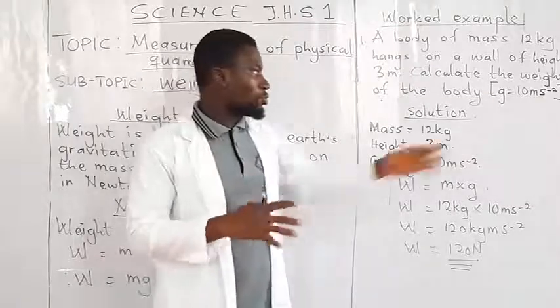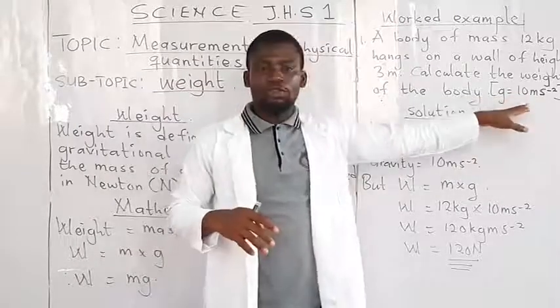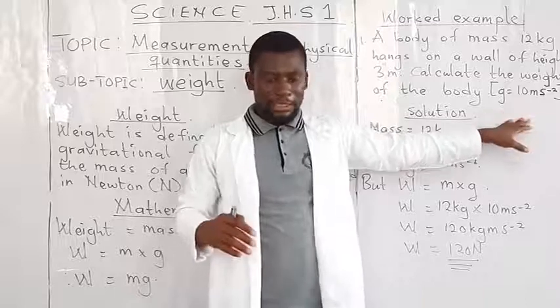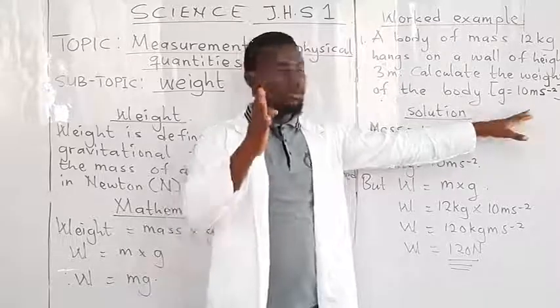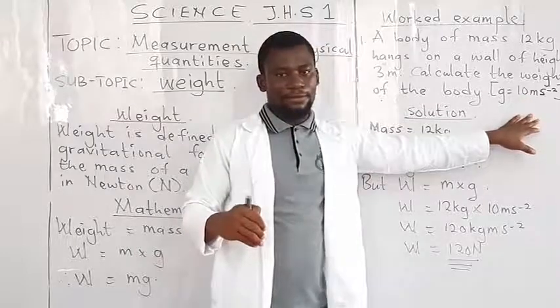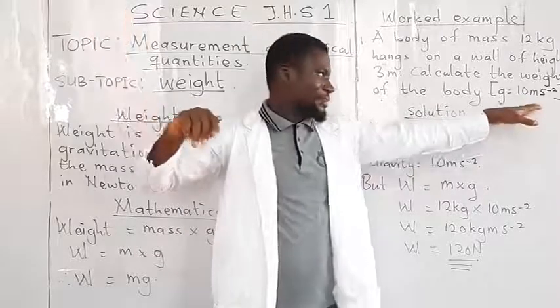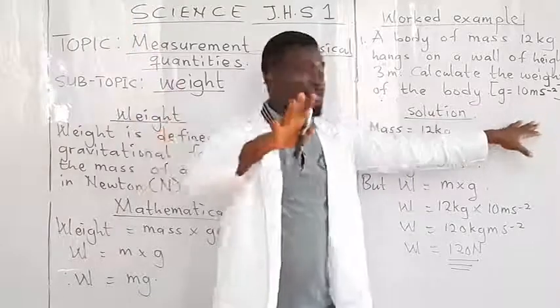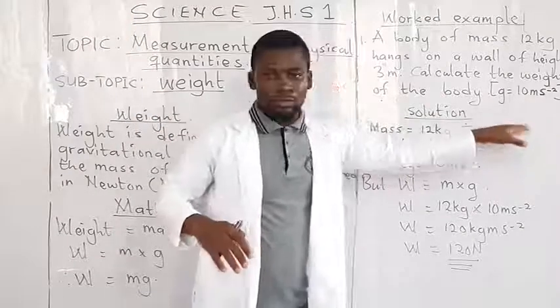Now, there's the value written here. We have g equals 10 meters per second square. And it's a constant on the earth. So any time you have g, it's given to you as 10 meters per second squared. Also note that it is 10 meters per second squared on earth. It is 1.6 meters per second squared on the moon. You look at all those things when you get to celestial bodies.